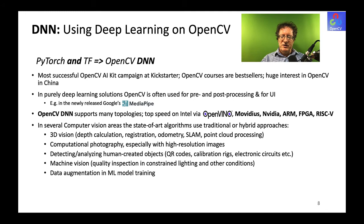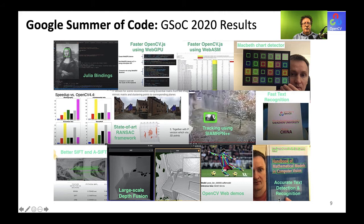OpenCV joined Google Summer of Code as it does every year. This year, 14 projects were added to OpenCV. These include Julia bindings, much improved and faster JavaScript interface, Macbeth color chart detection, general speed improvements, state-of-the-art RANSAC algorithms, a robust tracker, faster and more accurate text detection, and SIFT — now out of patent — joining the core of OpenCV as a robust feature detector. There's also large-scale depth fusion and web demos of running deep networks in browsers.